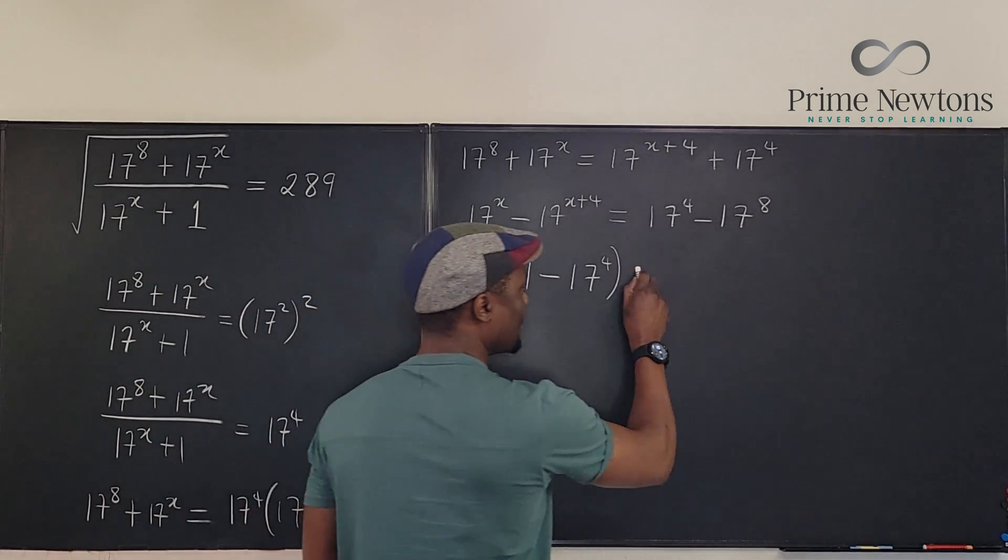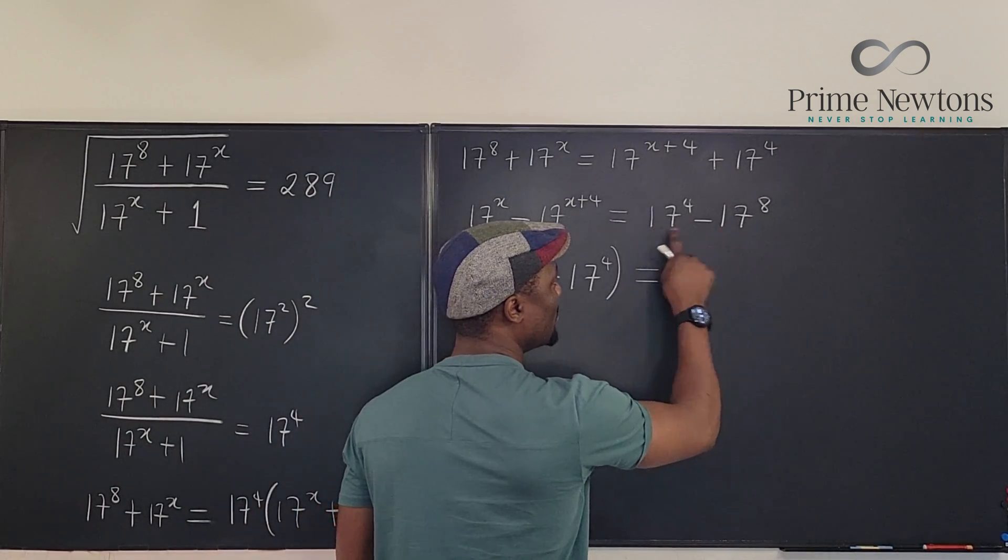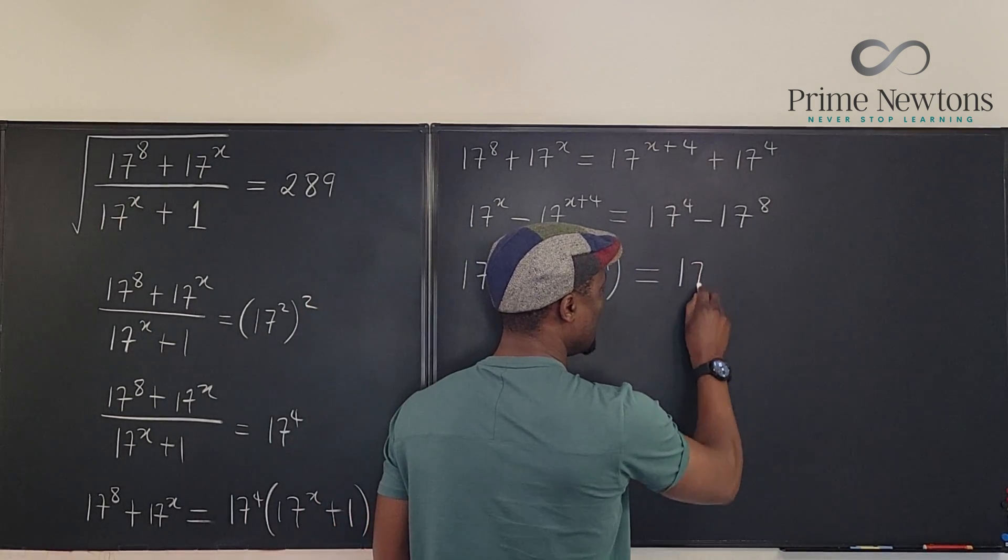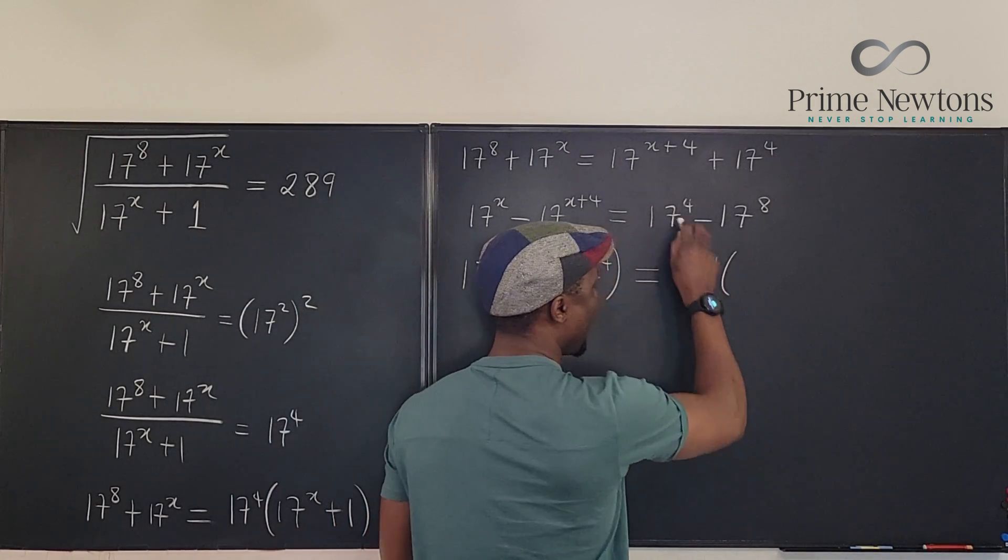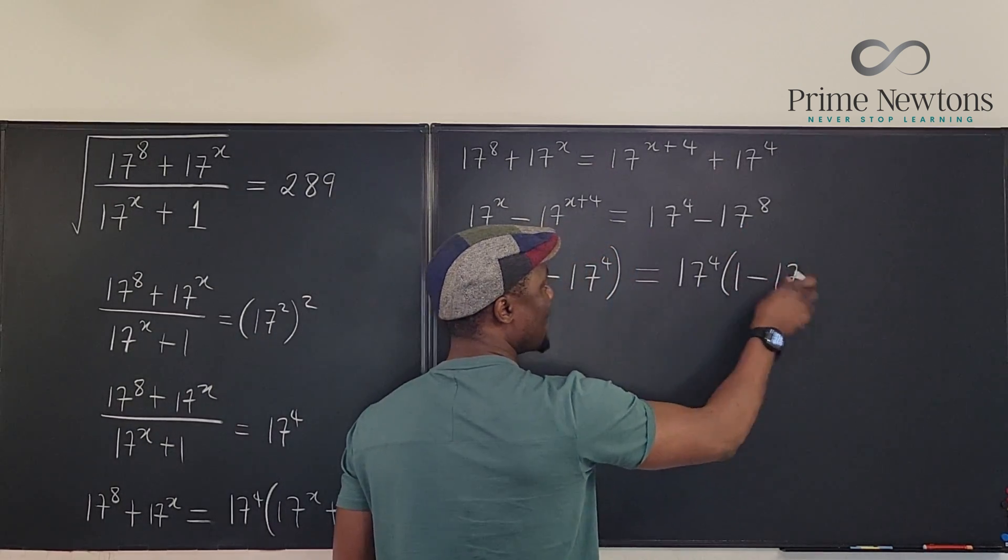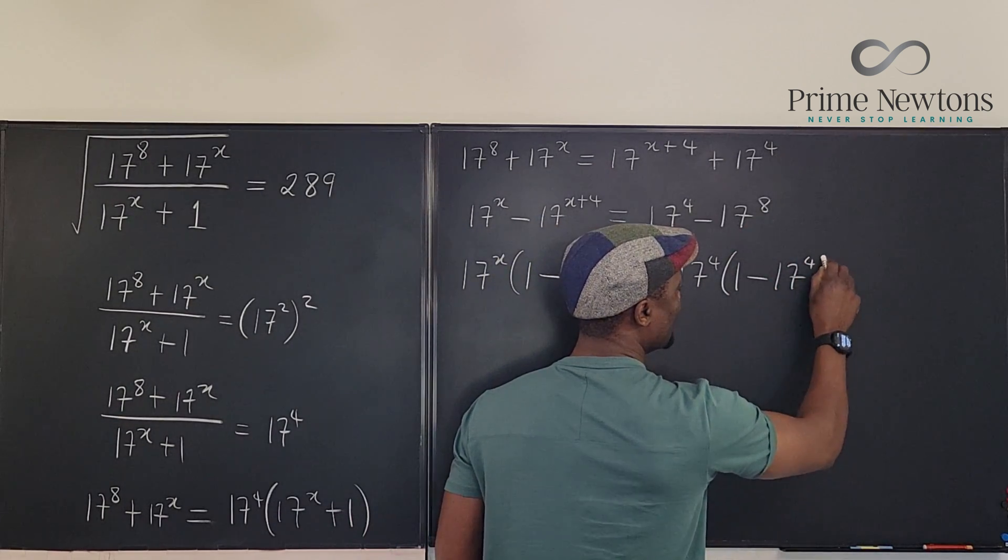I go here. What is common to both of them? 17 to the 4th. The smaller one is always common. So it's going to be 17 to the 4th. What I have is going to be 1 minus, this is 17. I subtract the exponents 17 to the 4th.